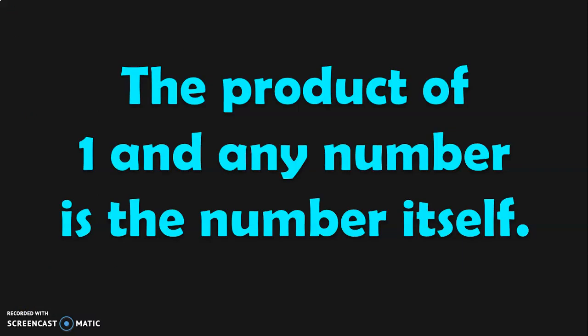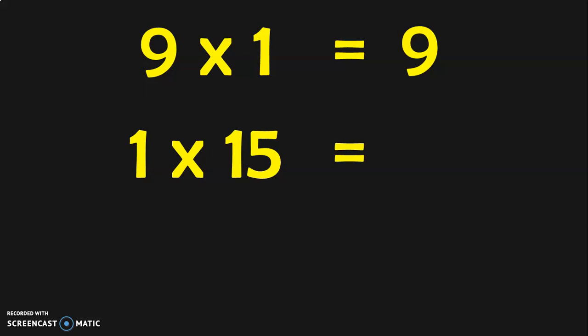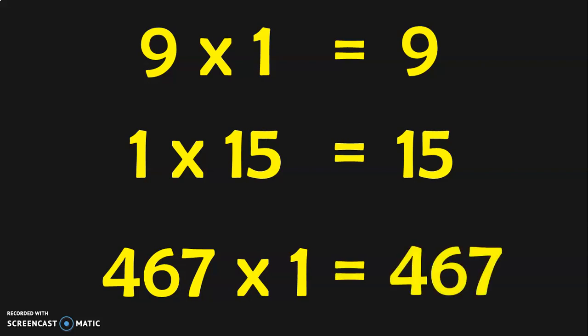Let us see the third property. The product of 1 and any number is the number itself. When you multiply any number by 1, or 1 by any number, you get the same number. For example, 9 into 1 is 9; 1 group of 15 items will give you 15. It doesn't matter if it's a 3-digit or 4-digit number — 467 into 1 is equal to 467.